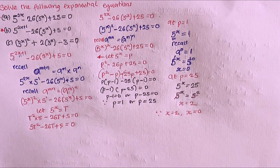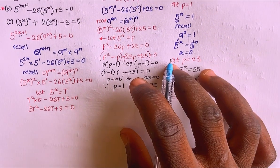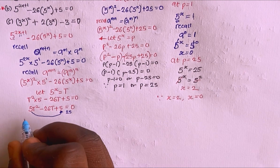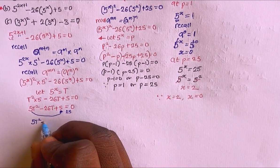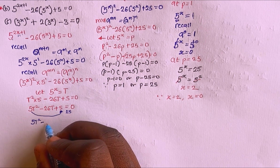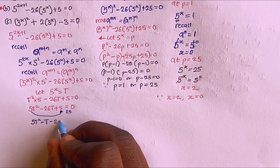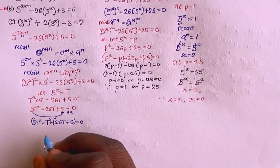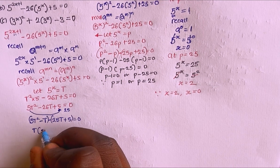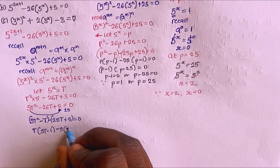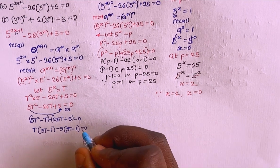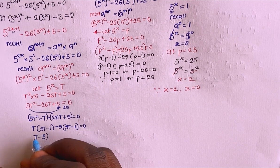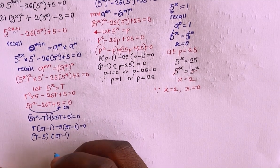To factorize 5T² minus 26T plus 5, I multiply 5 by 5 to get 25, and split the middle term as minus T minus 25T. This gives T(5T minus 1) minus 5(5T minus 1) equals 0, so (T minus 5)(5T minus 1) equals 0.